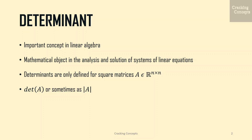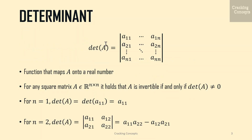Throughout the discussion, we'll be using the following notations to denote the determinant, i.e. 'det' or the vertical bar symbol. The determinant of A can be written in a format elaborating all of its elements from a₁₁ to a₁ₙ to aₙ₁ to aₙₙ. The determinant of a square matrix A is the function that maps A onto a real number.